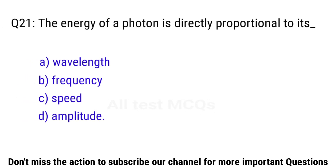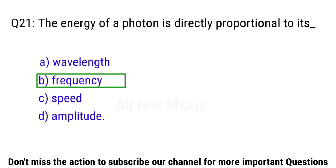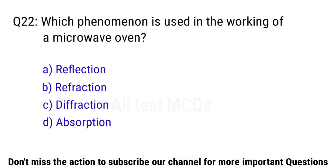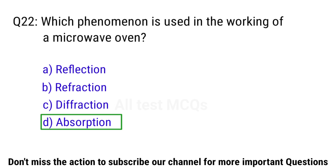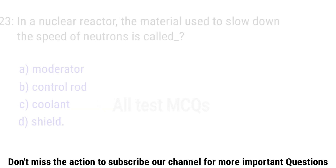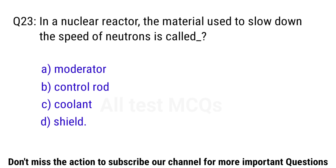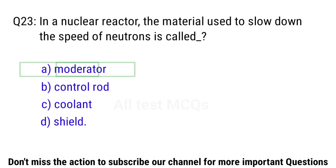Q21. Which of the following has the highest solubility in water? The right answer is option B. Q22. Which phenomenon is used in the working of a microwave oven? The right answer is option D. Absorption. Q23. In a nuclear reactor, the material used to slow down the speed of a neutron is called the right answer is option A. Moderator.